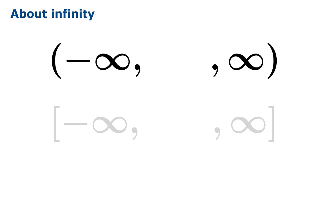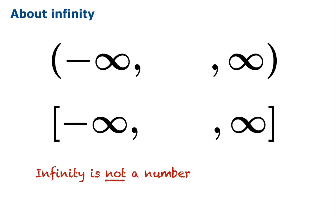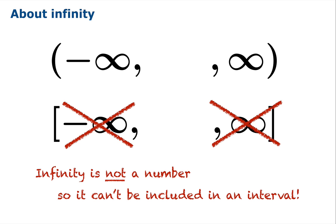Now about infinity. You'll notice that infinity and negative infinity use round braces. You'll never see this notation with square brackets because infinity is not a number. You can never include infinity in an interval, so you'll never see this notation. The only thing you'll see is round braces attached to infinity and negative infinity.